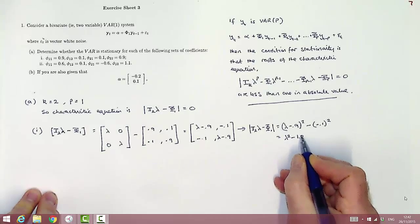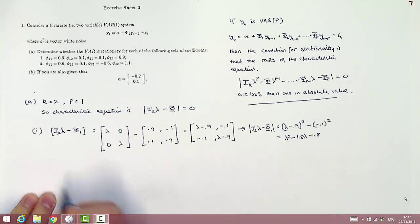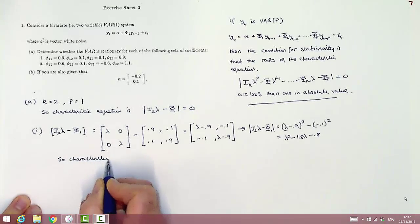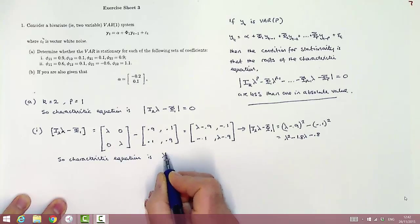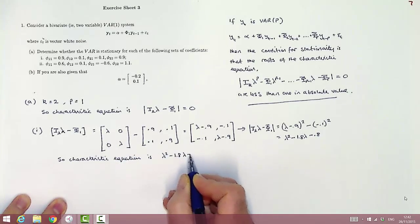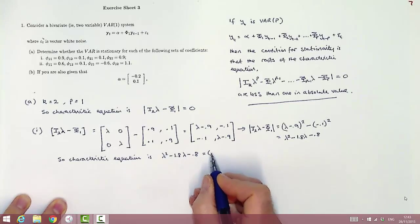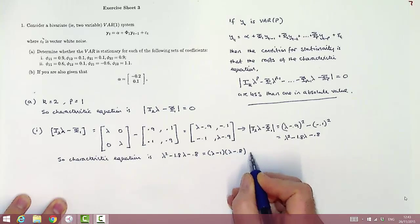Multiplying out, that gives us a quadratic in lambda of the following form. So a characteristic equation involves setting that quadratic in lambda equal to 0. As we write out the characteristic equation, we'll simplify a step here by recognizing that we can factor the polynomial to write it in the following way, lambda minus 1 times lambda minus 0.8.